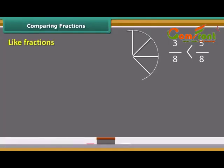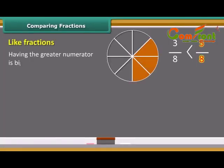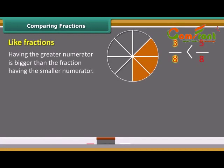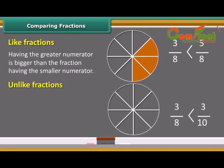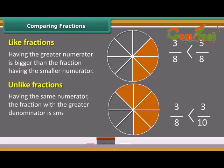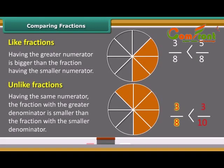In like fractions, the fraction having the greater numerator is bigger than the fraction having the smaller numerator. In the case of unlike fractions having the same numerator, the fraction with the greater denominator is smaller than the fraction with the smaller denominator.